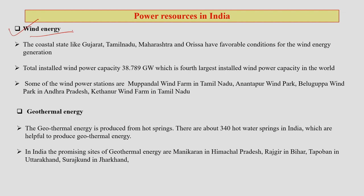Wind energy is favorable in coastal states like Gujarat, Tamil Nadu, Maharashtra, and Odisha. India's total installed wind power capacity is around 38.7 gigawatts, the fourth largest in the world. Notable wind power stations include Muppandal wind farm in Tamil Nadu, Anandpur wind park, Belugopa wind park in Andhra Pradesh, and Kethanur wind farm in Tamil Nadu.